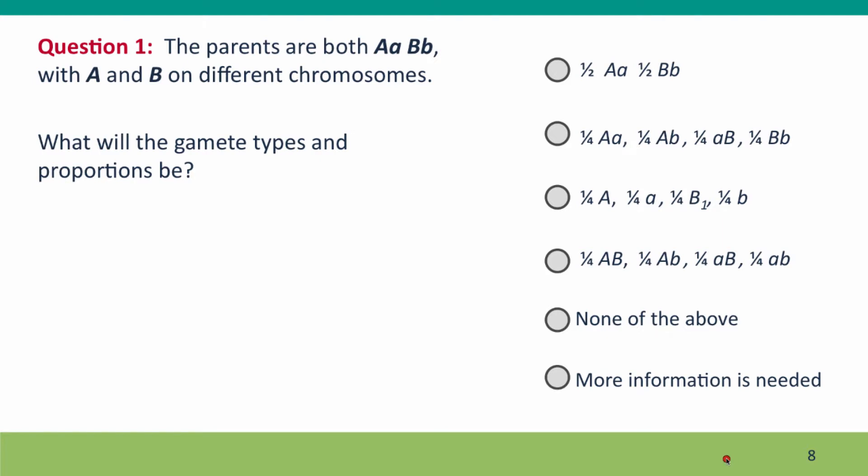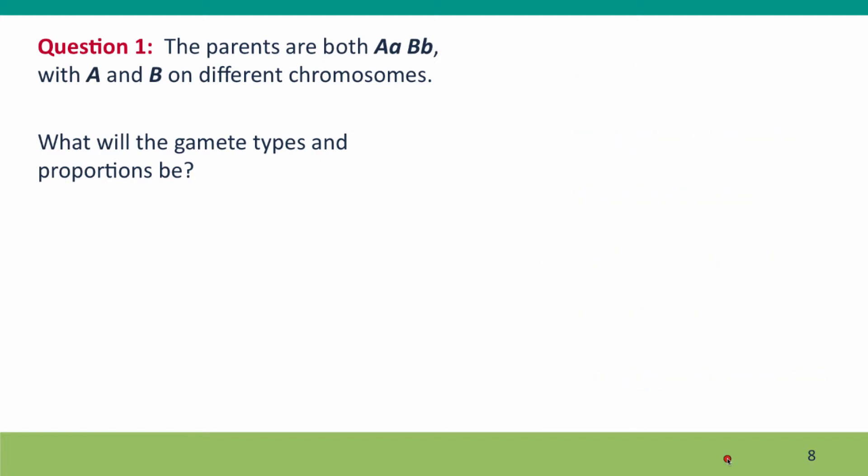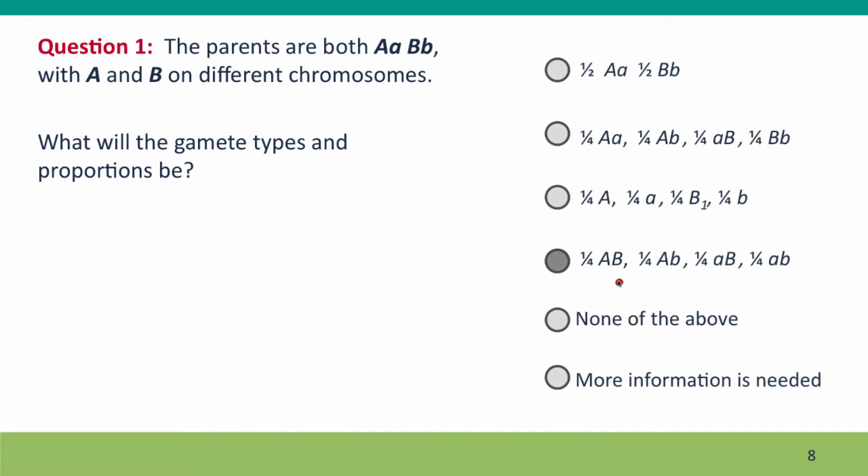So the first thing is, what are the gamete types and proportions going to be? The answer is that you're going to have four different kinds of gametes in equal proportion, a quarter each of big A, big B, big A little b, little a big B, and little a little b. Now we're in a position to choose our mating square.